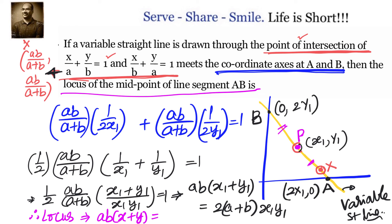To summarize: a variable straight line means all lines passing through the point of intersection of the two given lines. For all such lines, we calculate the values of A and B where they meet the axes, take the midpoints, and join them — that is the locus of midpoint of line segment AB, given by ab(x + y) = 2(a + b)xy.